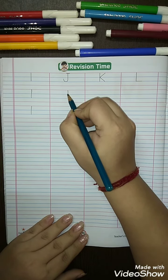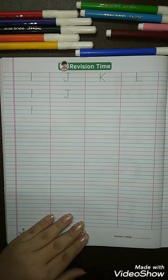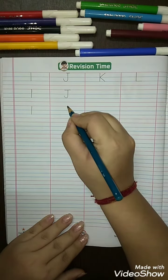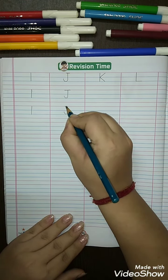Then make a curve, a sleeping line. J, J for jug. Make a standing line, curve, and make a sleeping line. J for jug.